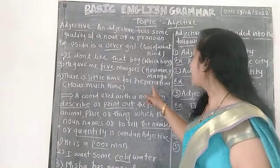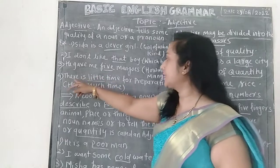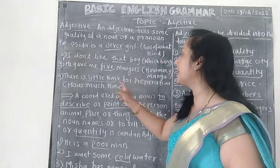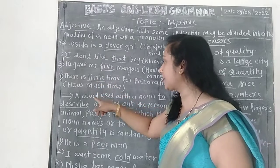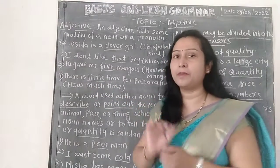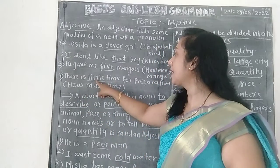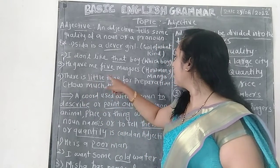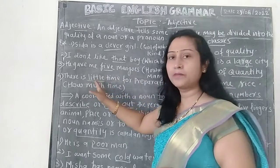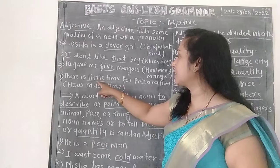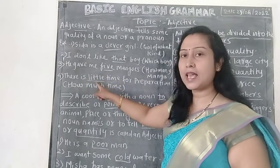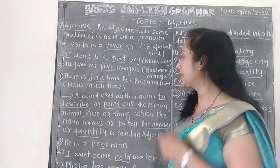There is little time for preparation. In this sentence, 'little' shows how much time. How much time for preparation? Little time. That's why 'little' is the adjective in this sentence — it tells how much.